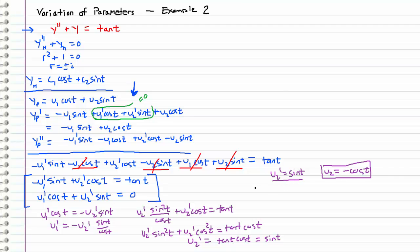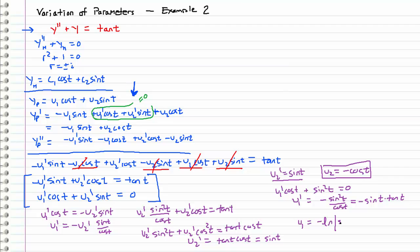Now let's substitute u2 prime back into the second equation. We have u1 prime cosine t plus sine squared t equals zero, so u1 prime equals negative sine squared t over cosine t, which I'll rewrite as negative sine t times tangent t. There is a known trig integral identity for this, so using that identity, u1 equals negative natural log of the absolute value of secant t plus tangent t, plus sine t.